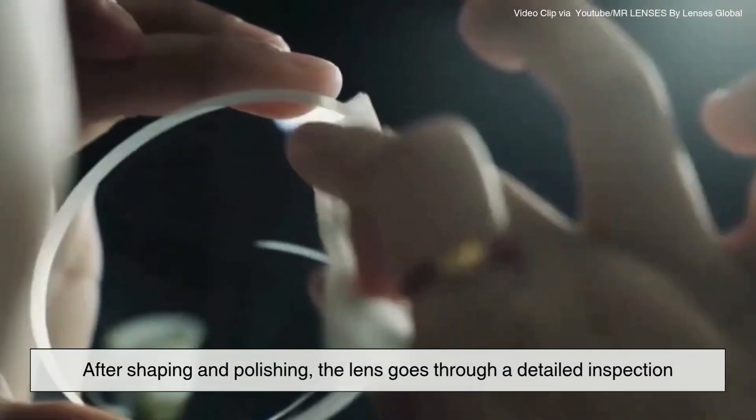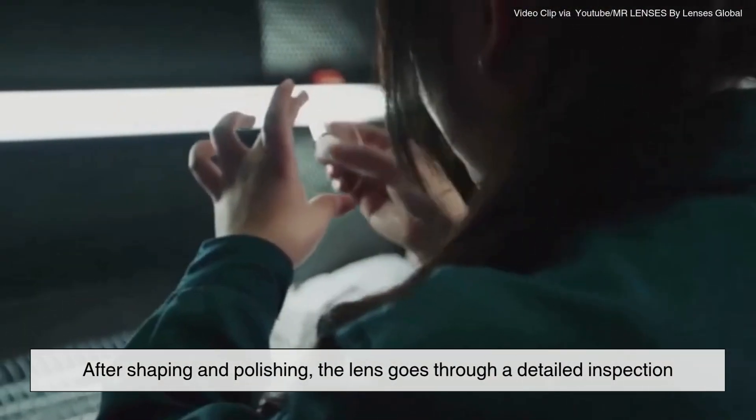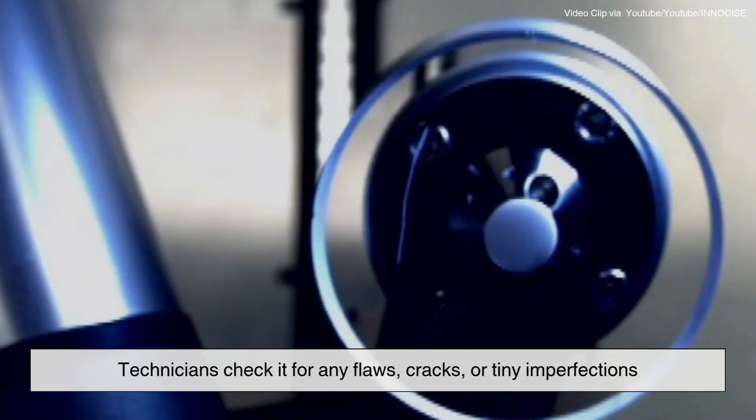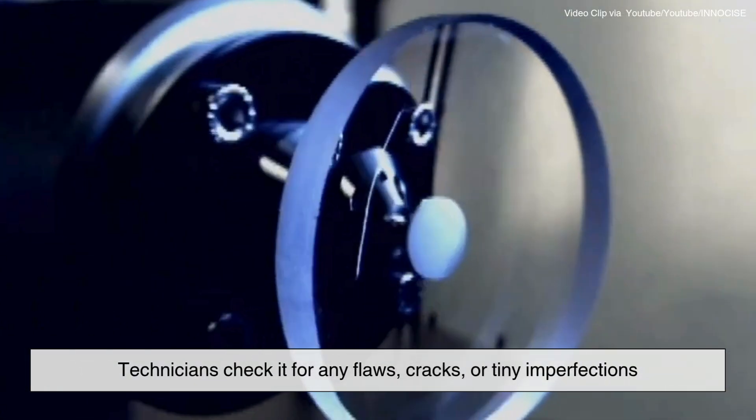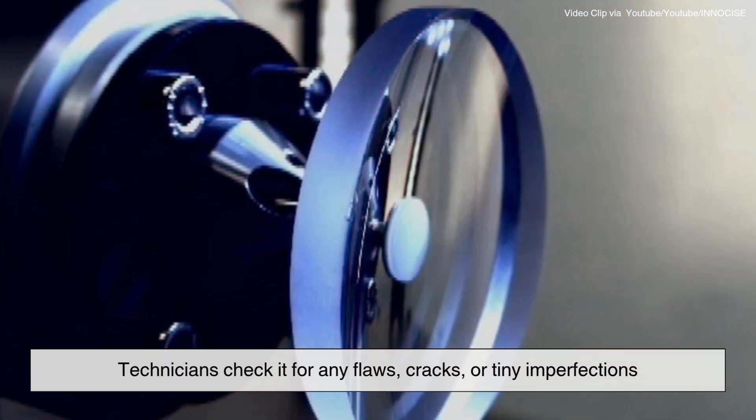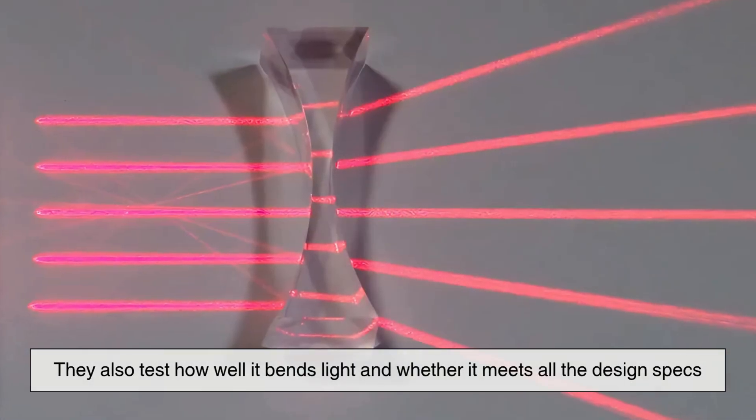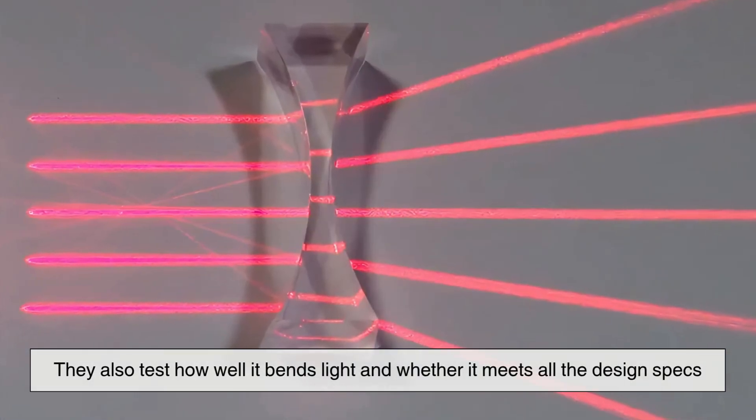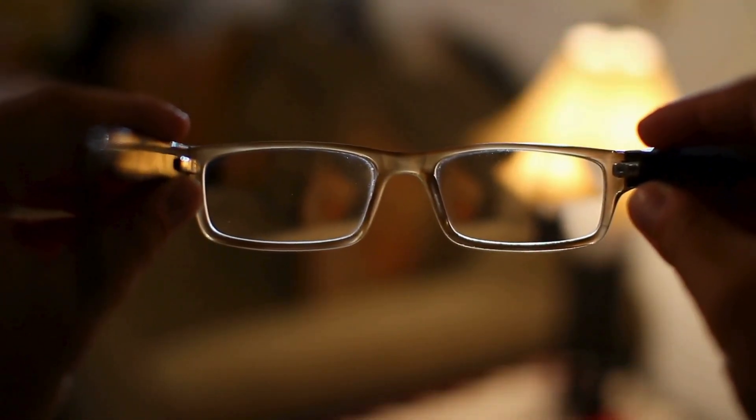After shaping and polishing, the lens goes through a detailed inspection. Technicians check it for any flaws, cracks, or tiny imperfections. They also test how well it bends light and whether it meets all the design specs.